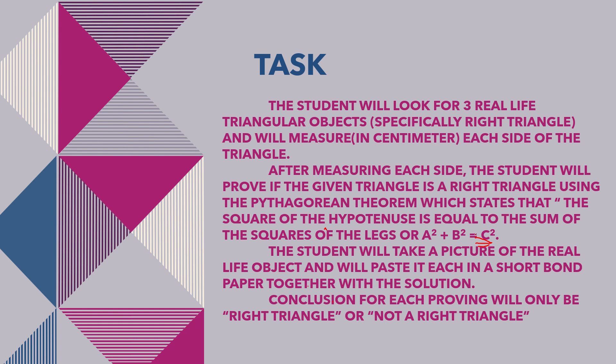The student will take a picture of the real-life object and paste it on a short bond paper together with the solution. That solution is where you prove whether it is a right triangle using the Pythagorean theorem. Your conclusion for each proving will only be either 'right triangle' or 'not a right triangle.'